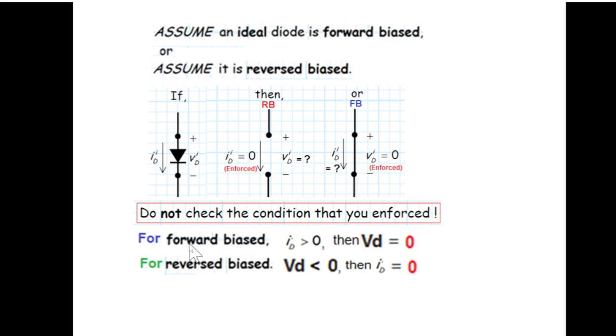Very important point: when we are considering that the diode is forward biased, the diode current has to be greater than zero or positive, and obviously Vd is zero. In case of reverse bias, the reverse bias voltage has to be less than zero or Vd has to be negative, and the current is obviously zero as we have enforced.